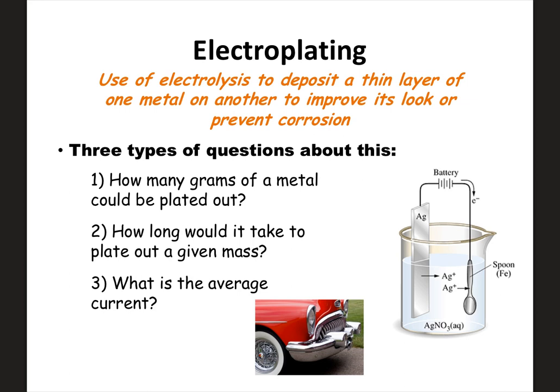Electroplating is when we use electrolysis to deposit a thin layer of one metal onto another metal. This can improve appearance or prevent corrosion. You need an electrical current — for example, you could use a battery to cause silver to plate onto silverware, or to electroplate car parts to improve their look or prevent corrosion.